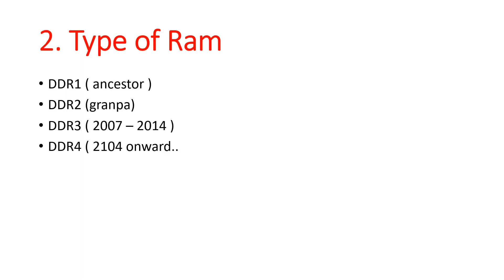Number two: types of RAM. We have DDR1, DDR2, DDR3, and DDR4. DDR4 is the latest, but DDR3 is still usable — I'm currently using it. It's getting hard to find nowadays, but it is still cheaper than DDR4. If you're using DDR2 you're a grandpa, and DDR1 is basically an ancestor.